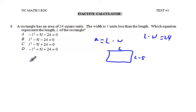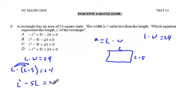So let's rewrite this equation down here. L times W equals 24. L times the width, which is L minus 5, equals 24. Let's use the distributive property to solve this problem. L times L is L squared. L times negative 5 is negative 5L equals 24.